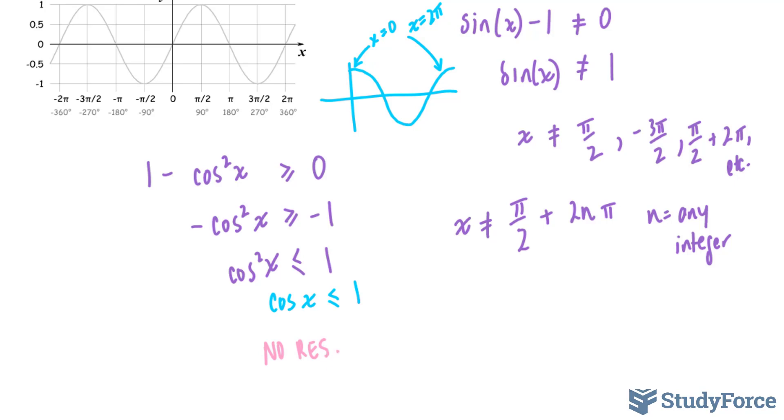That being said, we're going to combine what we found in the first term and the second term. So therefore, your domain includes all x values such that x cannot equal π/2 + 2nπ, where x belongs to all real values. And that's the answer for the first question.